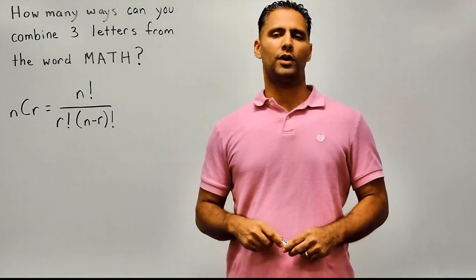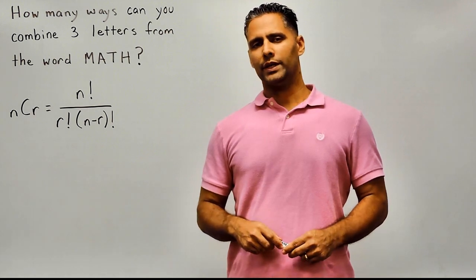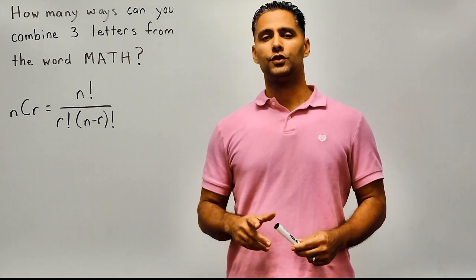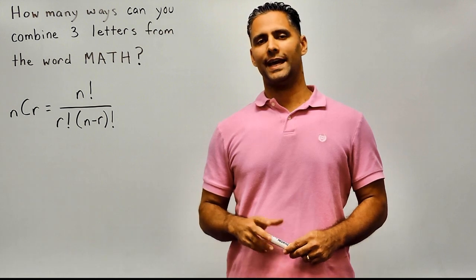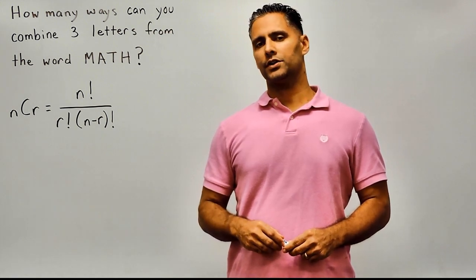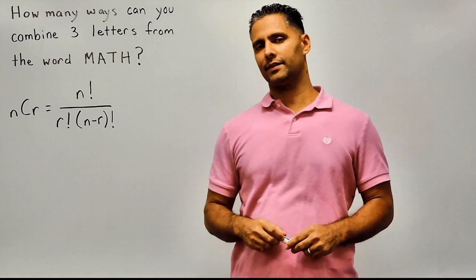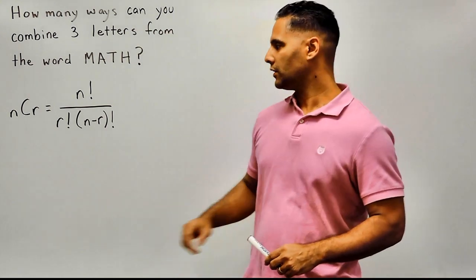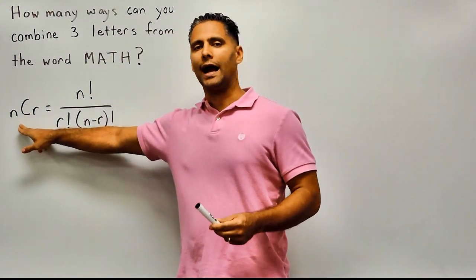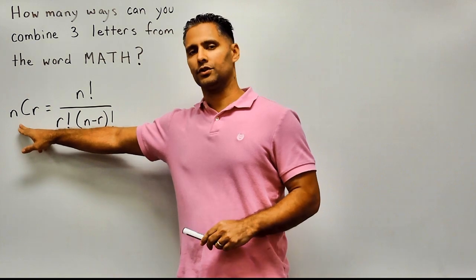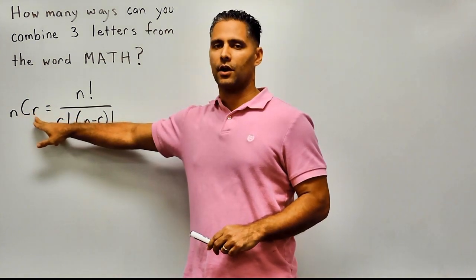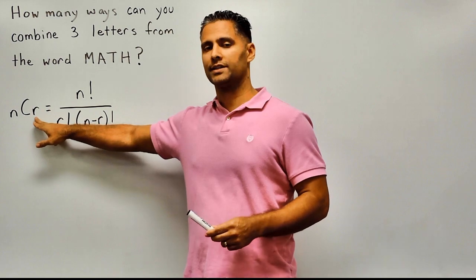This problem wants us to figure out how many ways we can combine three letters from the word MATH. To do this, we are going to use something called the NCR function. The NCR function has two variables inside the equation: the letter N and the letter R. N stands for how many total objects you have to choose from, and R stands for how many objects you are combining from the total at one time.